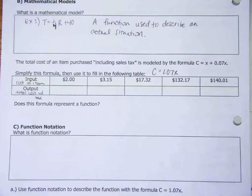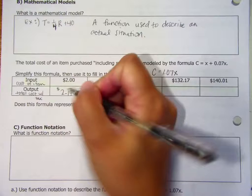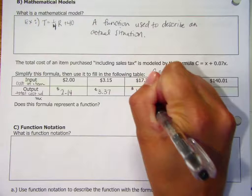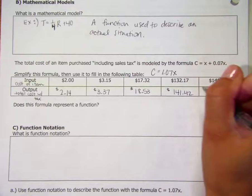Alright, here are the output values that we should be getting: 2.14, 3.37, 18.53, 141.42, and 149.81. So we are just taking each of those inputs basically multiplying by 1.07.